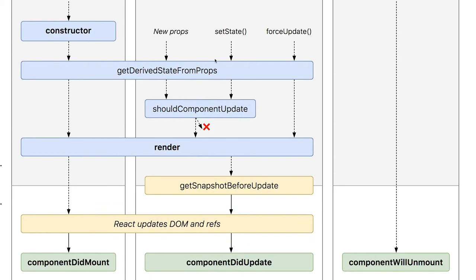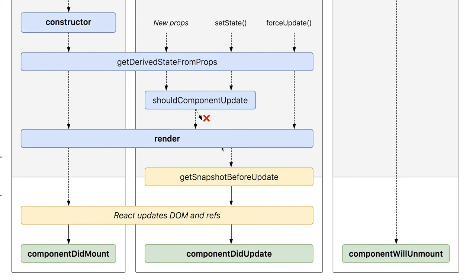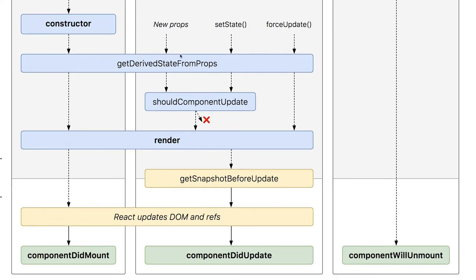So this is the lifecycle method we are currently talking about. When you are updating a state: getDerivedStateFromProps, shouldComponentUpdate, render, getSnapshotBeforeUpdate, and then finally componentDidUpdate. From this diagram we should now have clarity. During initialization we saw the logs, and now when updating state, getDerivedStateFromProps and render are getting triggered.